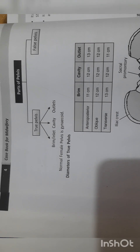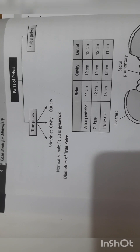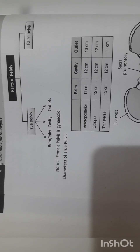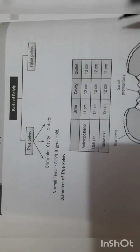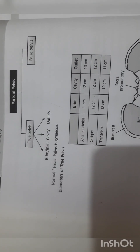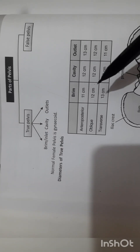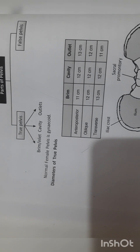The pelvis has two parts: true pelvis and false pelvis. The true pelvis has three criteria: brim, cavity, and outlet — this is the normal gynecoid pelvis. The diameter of the true pelvis: anterior-posterior, oblique, and transverse. For anterior-posterior, we can remember 11, 12, and 13 — brim is 11, cavity is 12, and outlet is 13. Oblique diameter is 12.